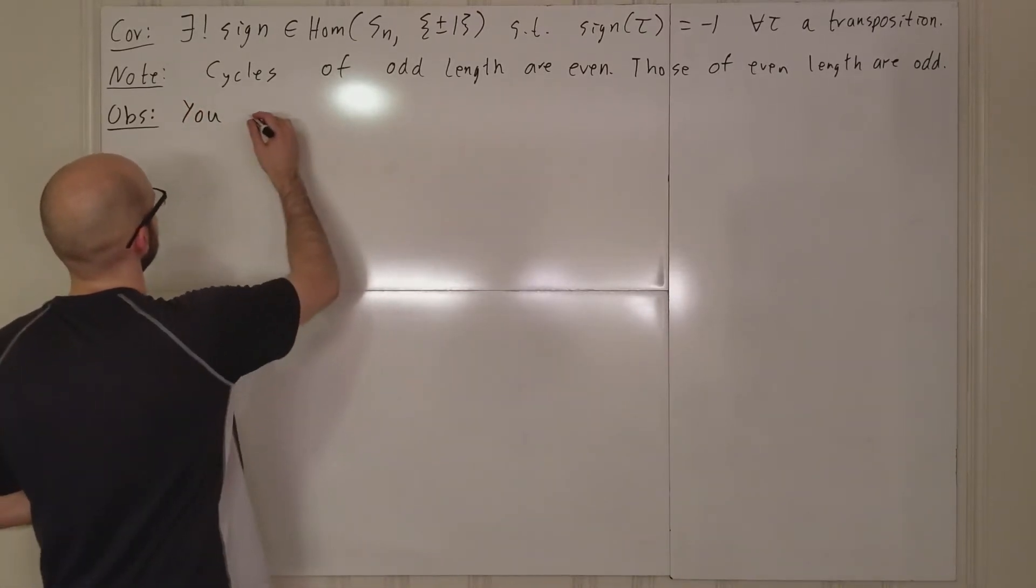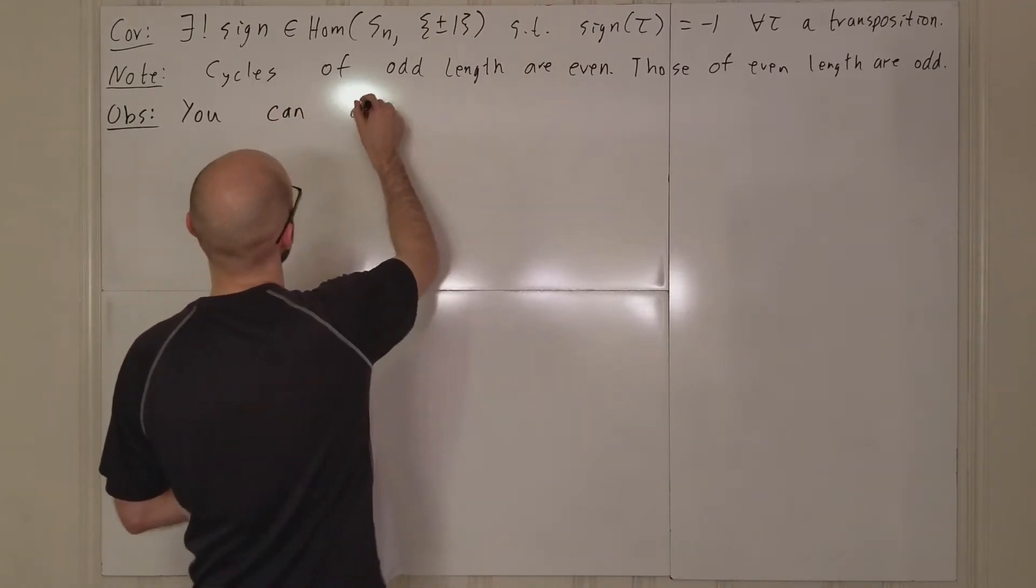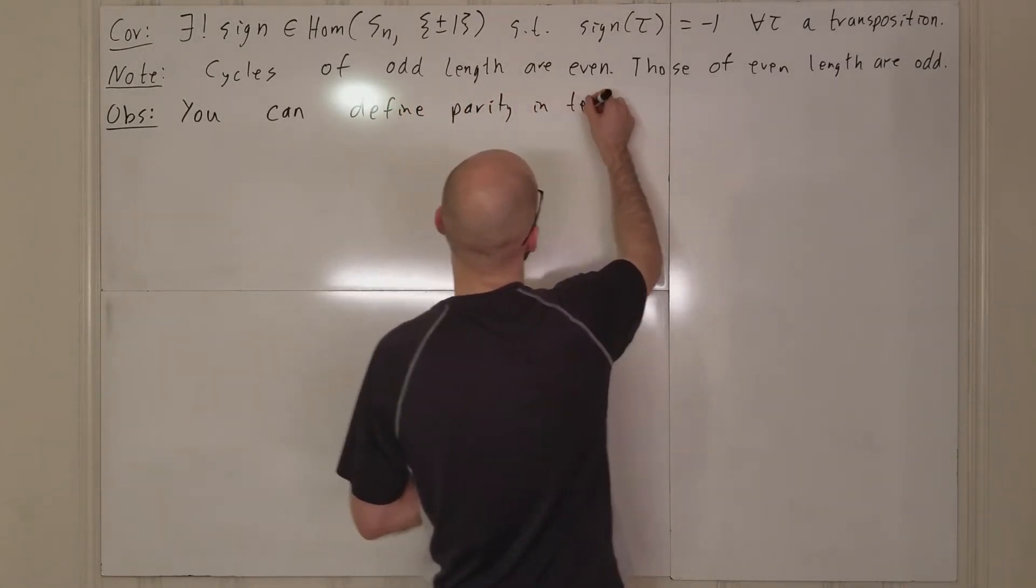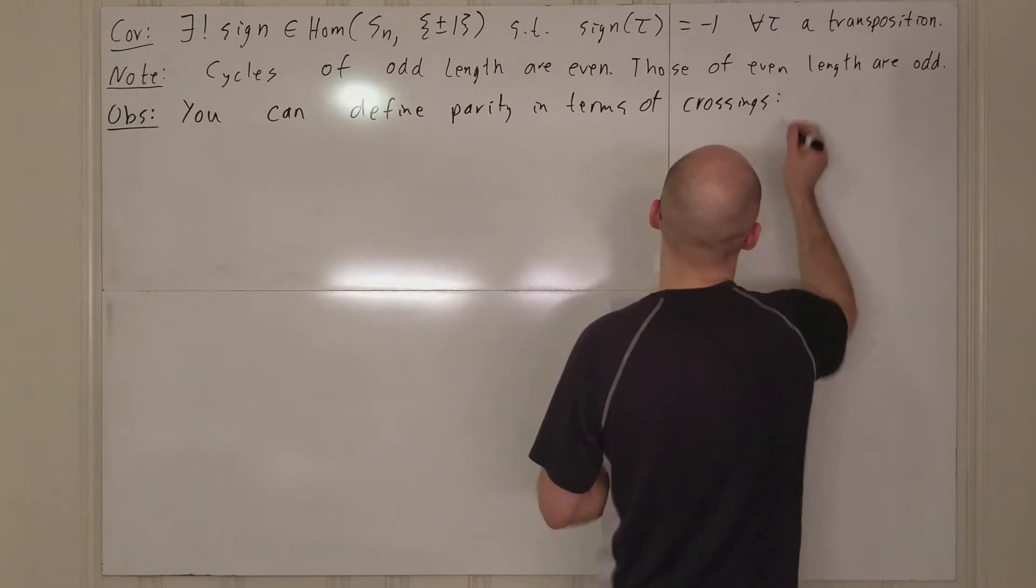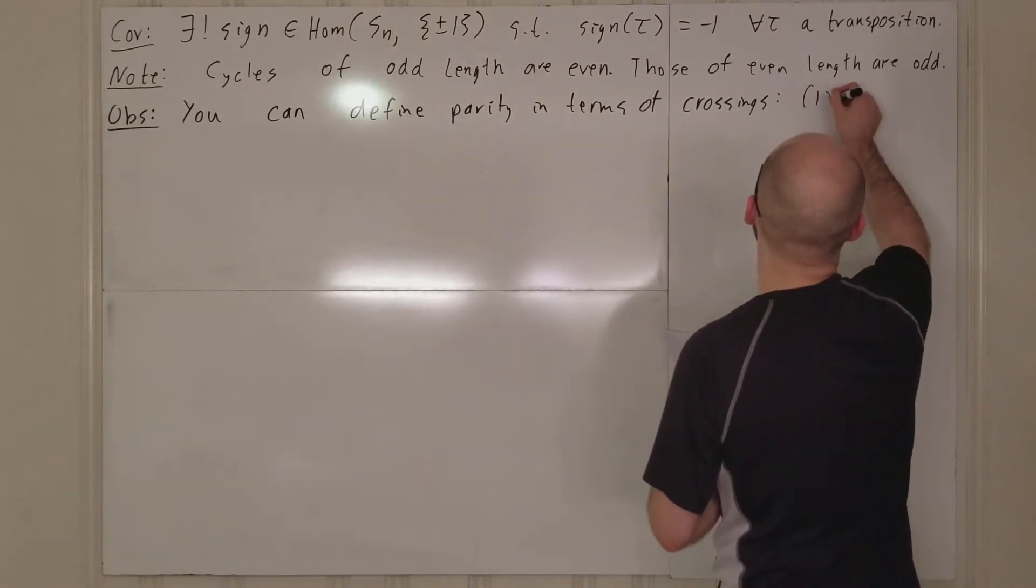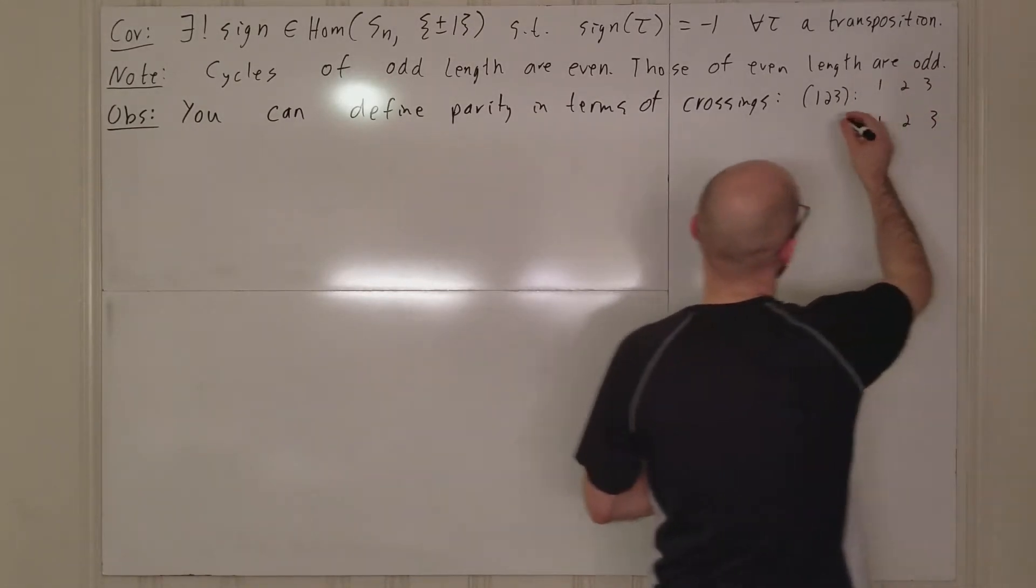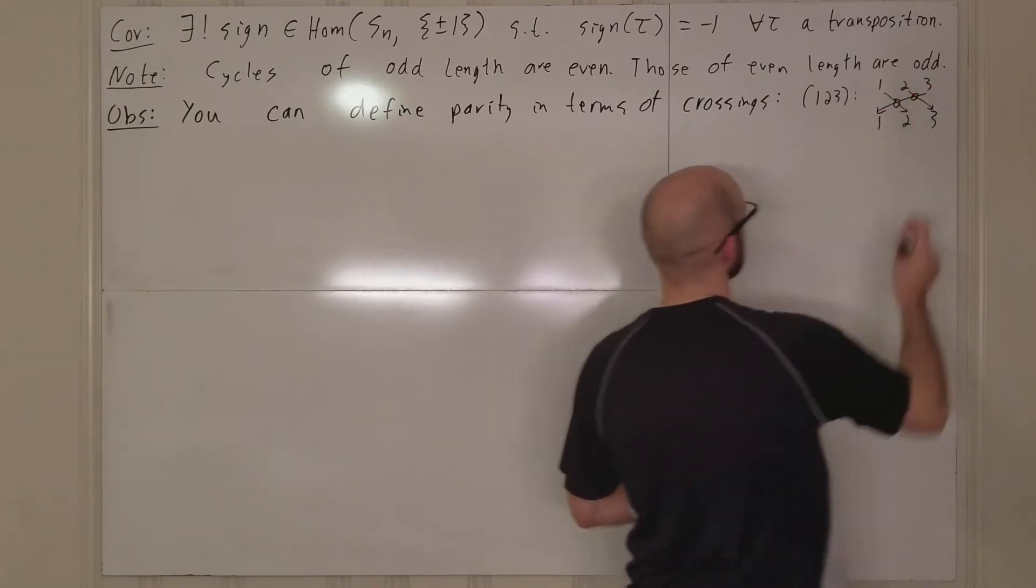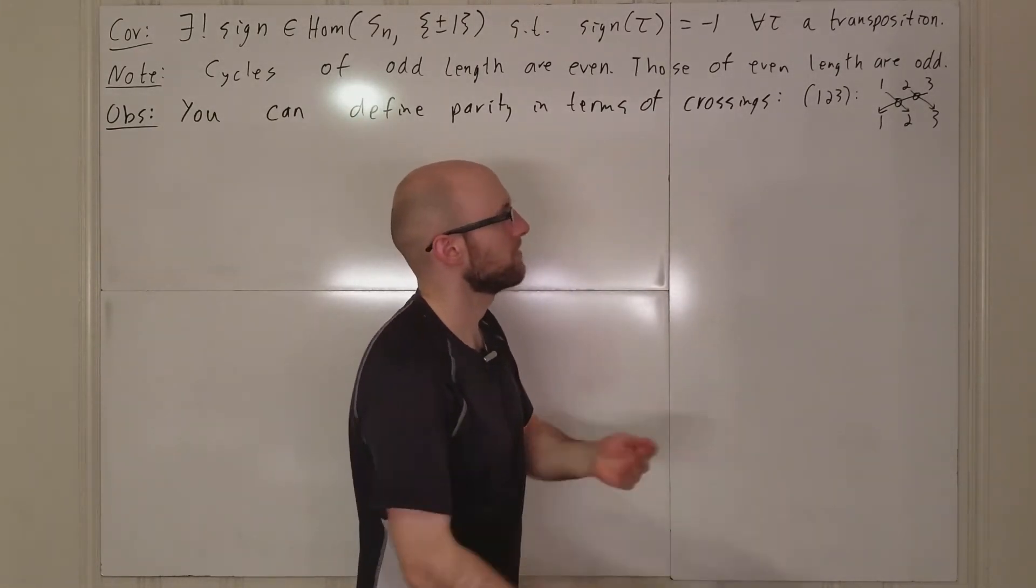Here's an observation that might make it a little more intuitive. You can define parity in terms of crossings. And what I mean by that is if you look at the permutation one, two, three, let's look at this in terms of where it sends elements. One will go to two, two will go to three, and three will go to one. And if you look here, I've circled the number of times that these lines intersect, and they intersect two times.